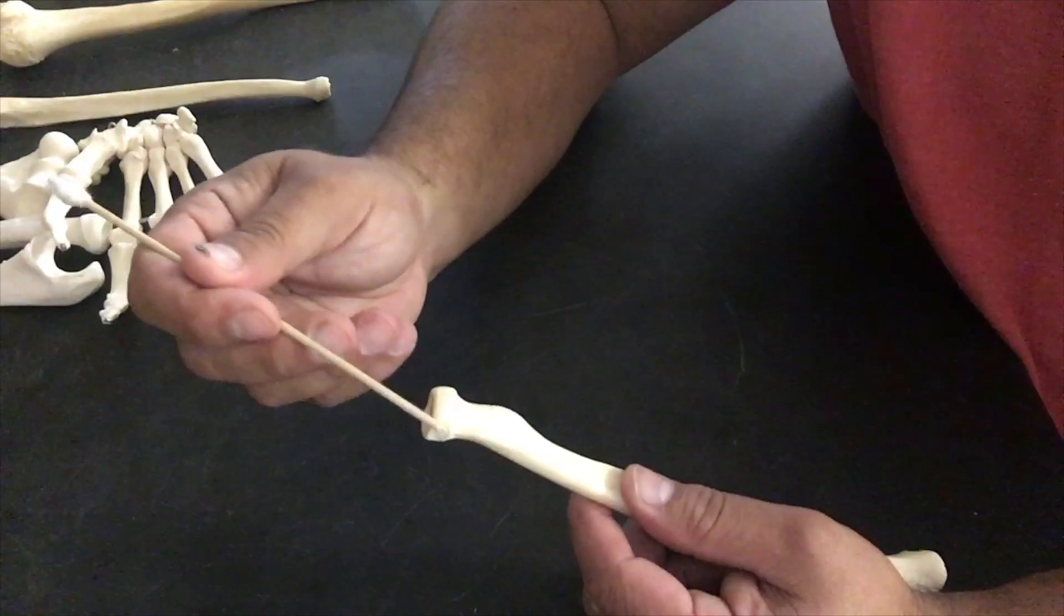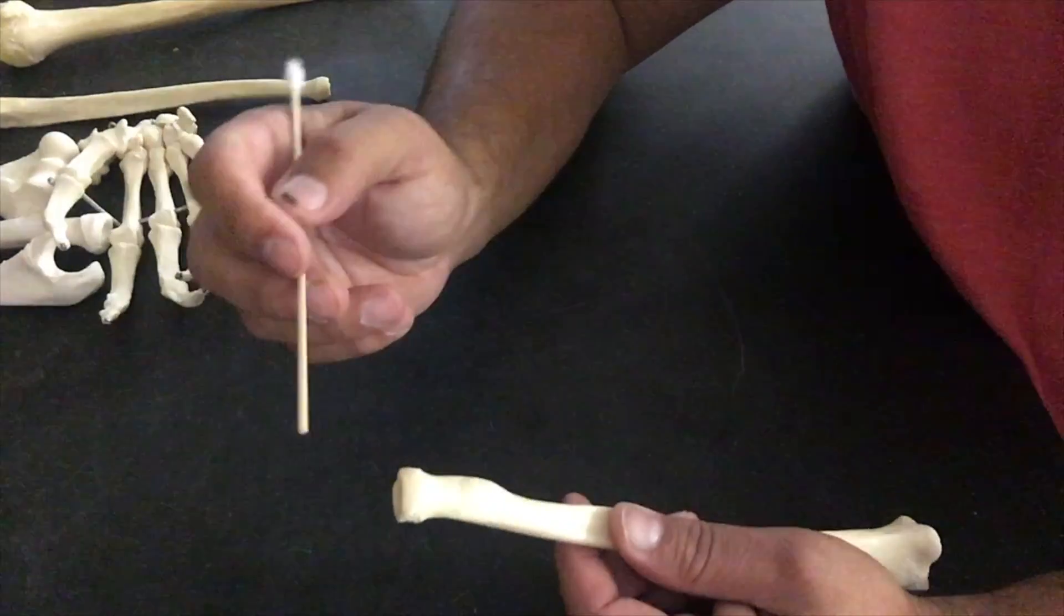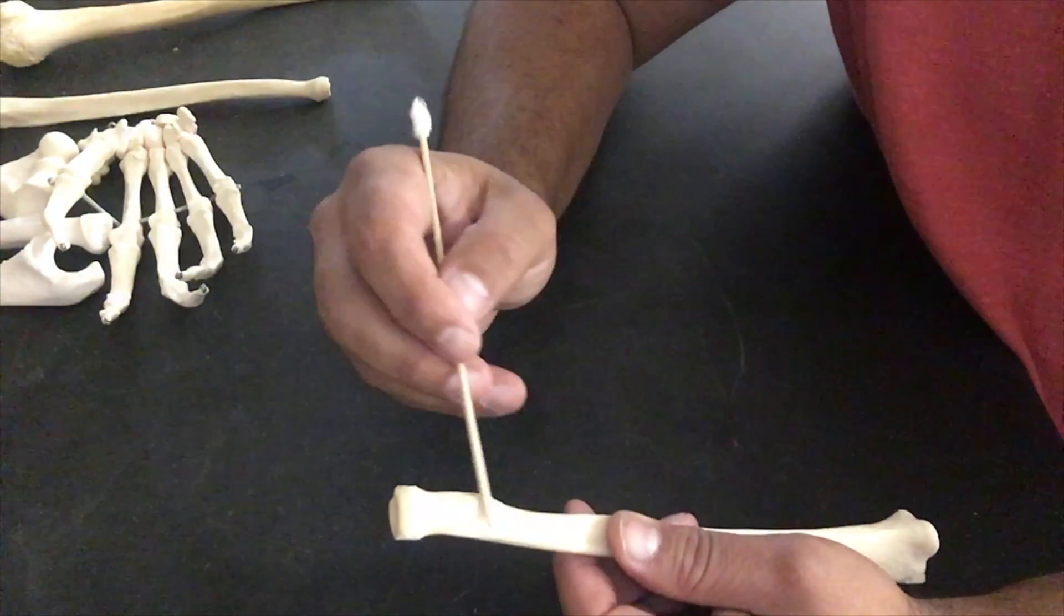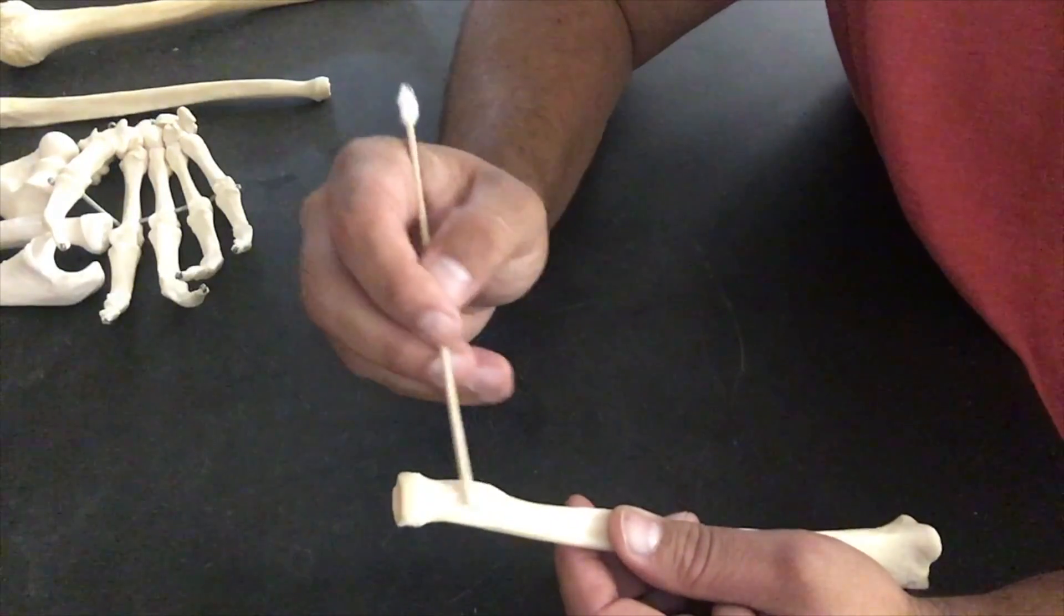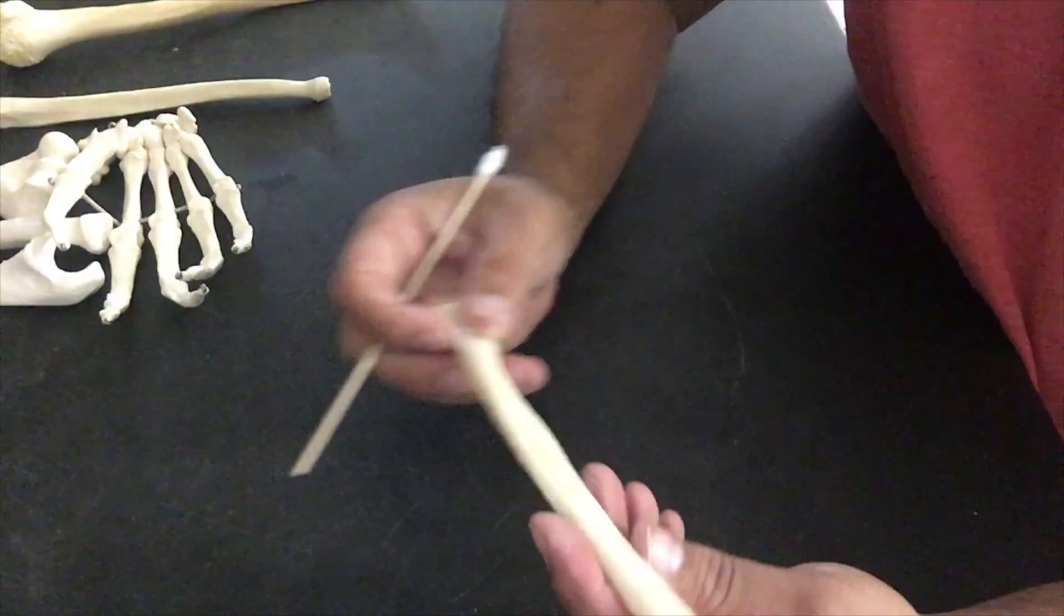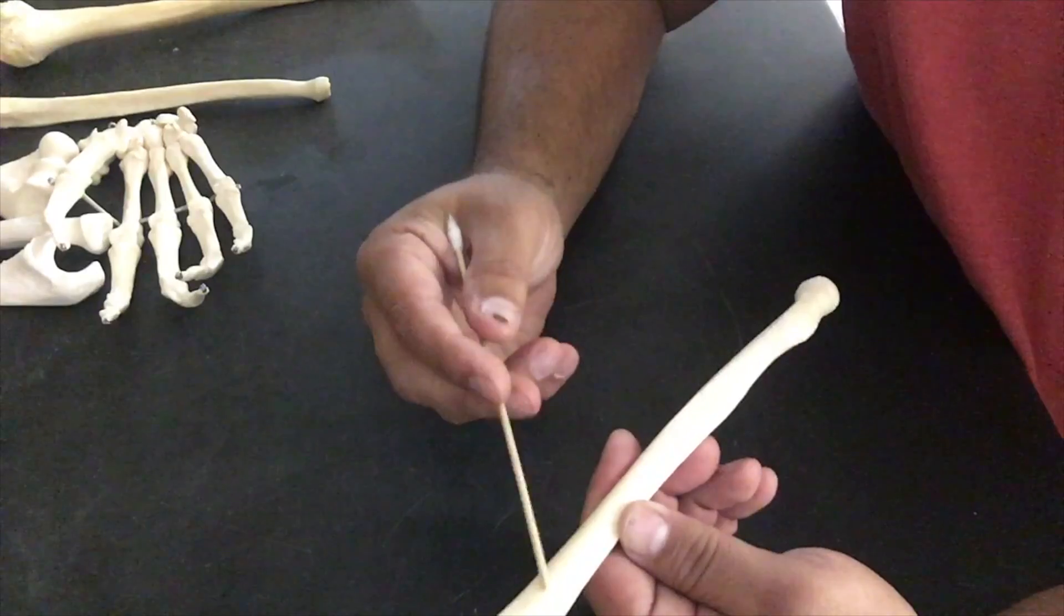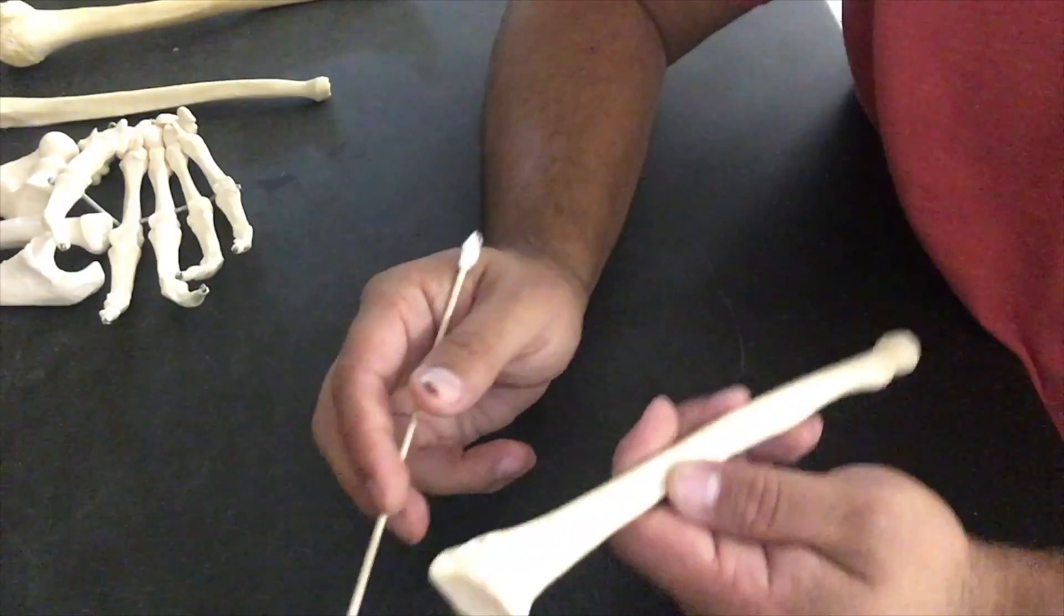This is what's going to turn and twist in that radial notch. You have your radial tuberosity, a bump on the radius. We go to our body or shaft.